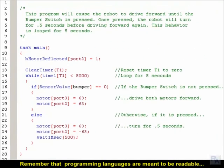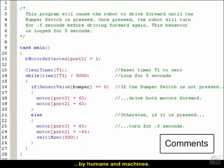Remember that programming languages are meant to be readable by both humans and machines. Sometimes the programmer needs to leave a note for human readers to help understand what the code is doing. For this, Robot C allows comments to be made.